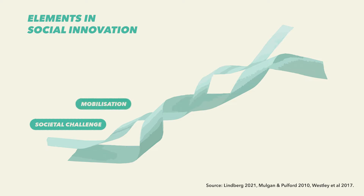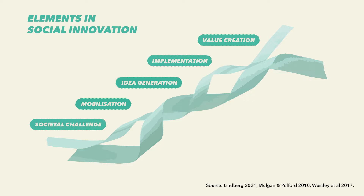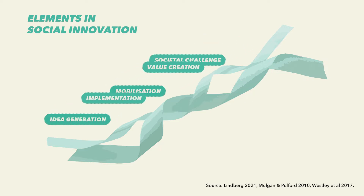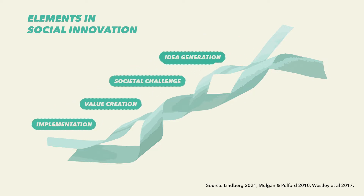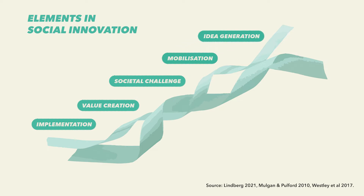Research shows that social innovation consists of several crucial elements and levels in the process of developing and establishing social innovations, including mobilization, idea generation, implementation and value creation. These do not always occur in chronological order, but tend to be continuously repeated and interwoven.